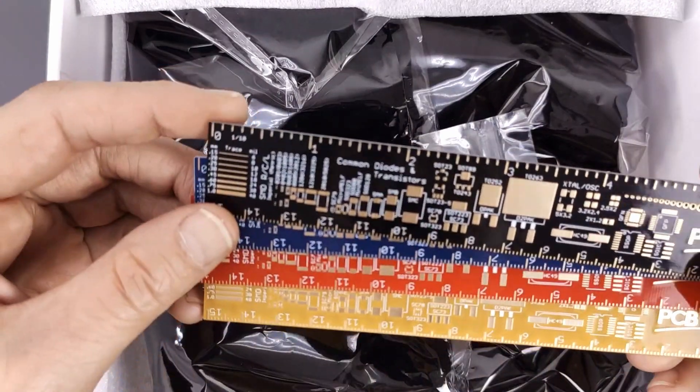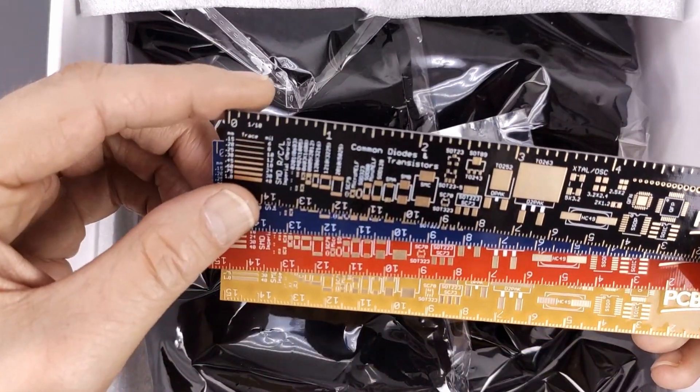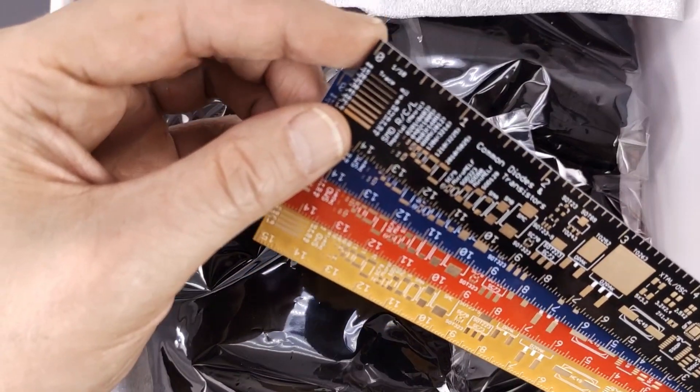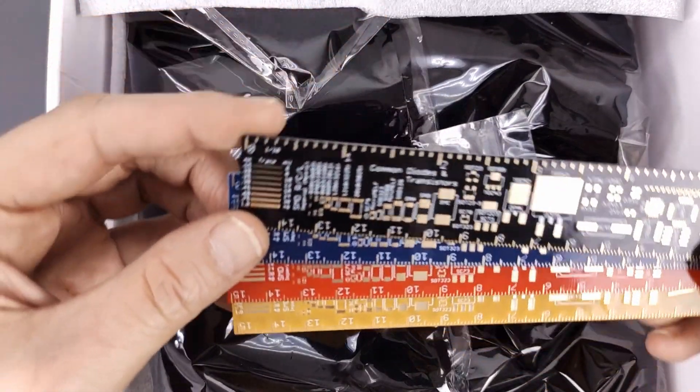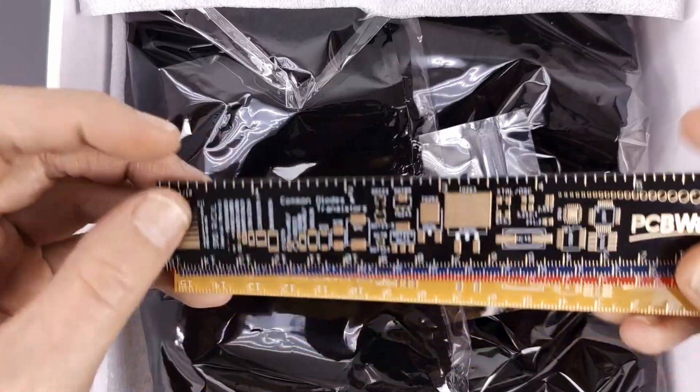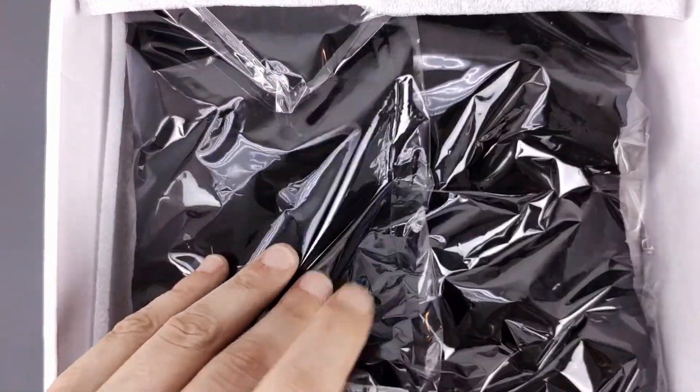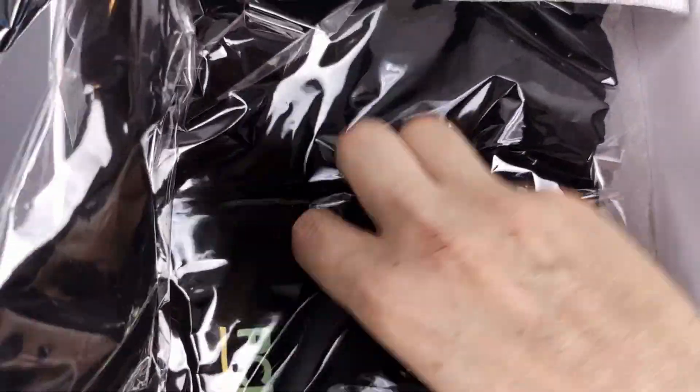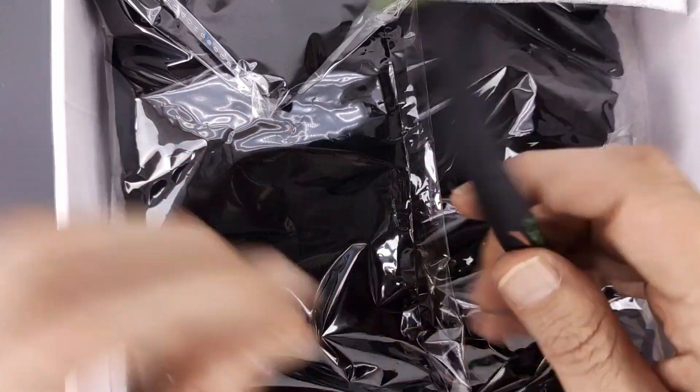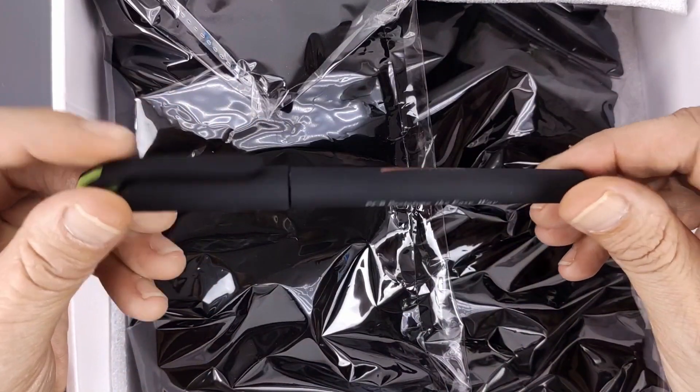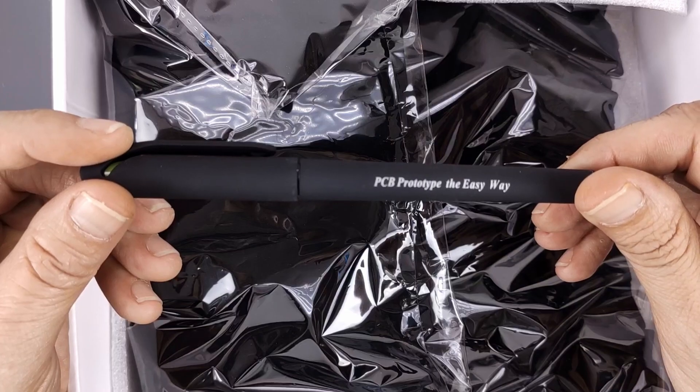And on there you can see the trace widths they do and the types of packages they do - all kinds of chips and passive components all the way down to 0201. That's nice, thank you very much. There's also a t-shirt. Oh, and a pen. It says PCBWay prototype the easy way.